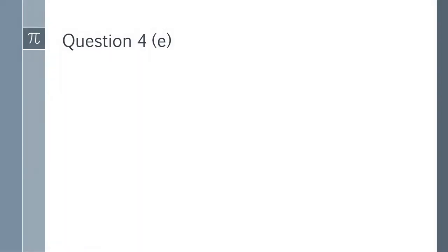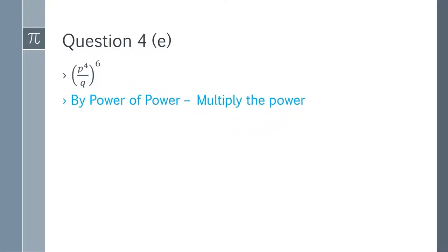Question 4e: (p^4/q)^6. Apply the power of power law to both numerator and denominator: p^(4×6) = p^24 and q^6. The answer is p^24/q^6.